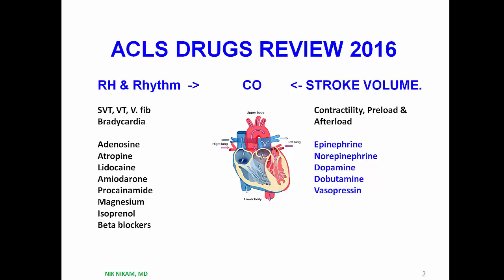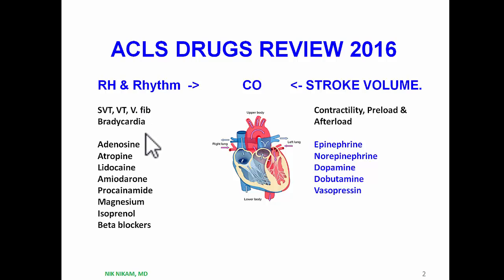That is dependent on left ventricular contractility, preload, and afterload, which determines the stroke volume. The stroke volume multiplied by the heart rate gives us the cardiac output. During a cardiac arrest — say, in a patient with an acute myocardial infarction — the pumping effect of the heart may be compromised. The patient may also have serious cardiac arrhythmias such as ventricular tachycardia, ventricular fibrillation, bradycardia, or even asystole.